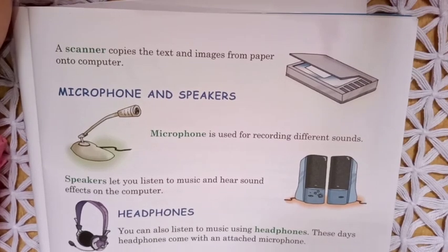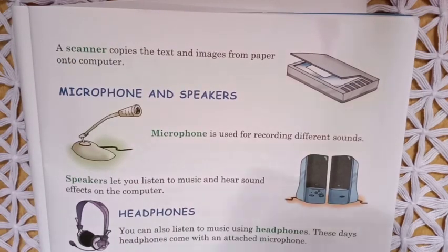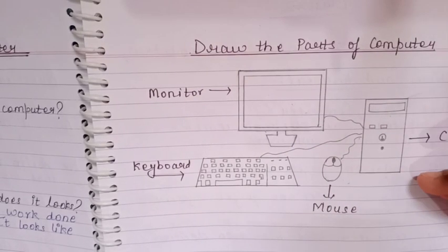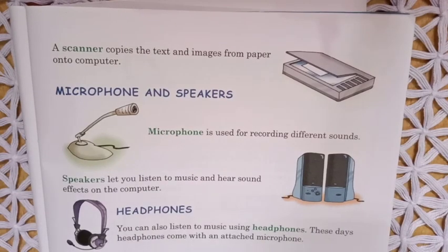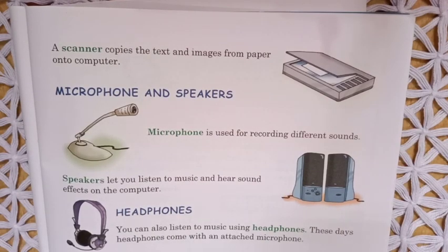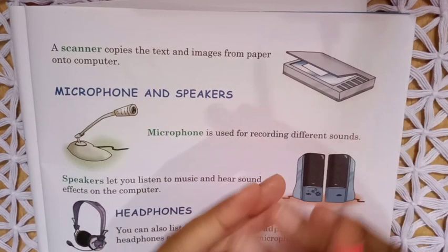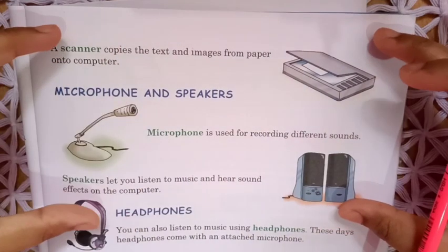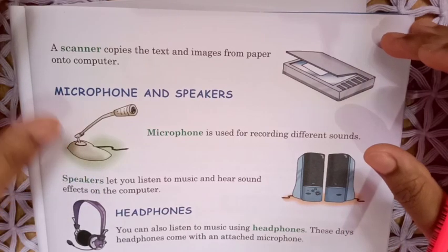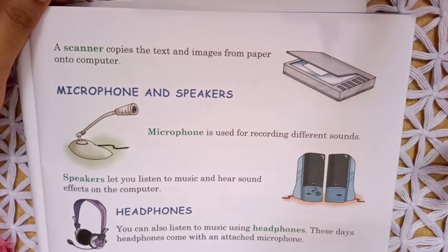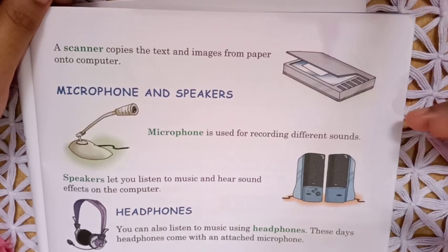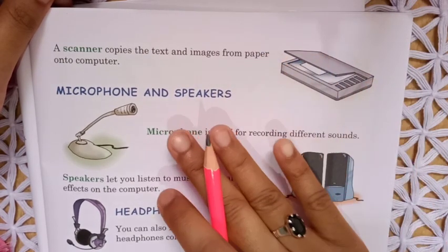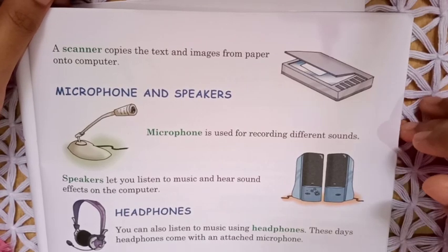Suppose I have written some notes in my copy and I want those notes to go inside the computer — in that case, a printer won't work; we need a scanner. A scanner can scan any text and images and save them inside the computer. Just like we click a photo of a book with a mobile to send images — that is also a type of scan. But a scanner is a machine, just like a photocopy machine, where you place your book and whatever is written or drawn gets transferred into the computer.